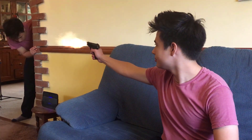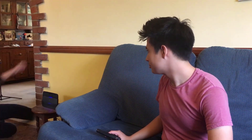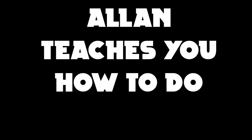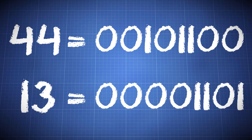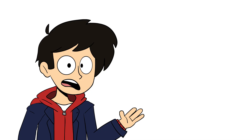Let's say you want to do this on 44 minus 13. Write down the numbers in binary: 44 becomes 00101100, and 13 becomes 00001101. Two's complement 13, and it now becomes 11110011. Remember to always add the one once you invert the binary, otherwise you'll get the wrong answer.